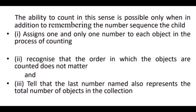To consolidate understanding in learners, three key concepts are highlighted. Firstly, we need to assign one and only one number to each object in the process of counting. Secondly, they should recognize that the order in which the objects are counted does not matter. Thirdly, we make children understand that the last number named also represents the total number of objects in the collection.